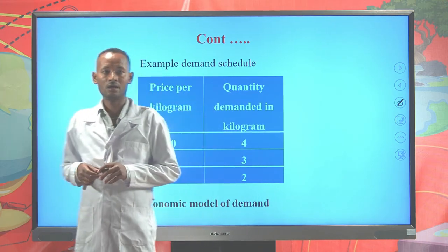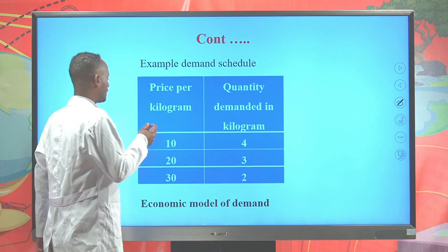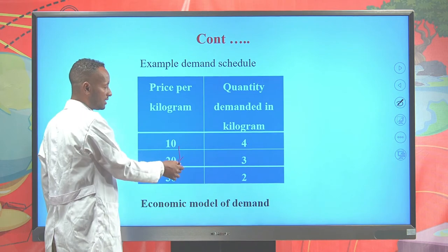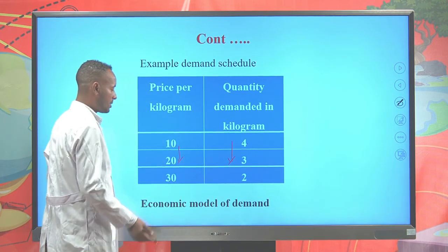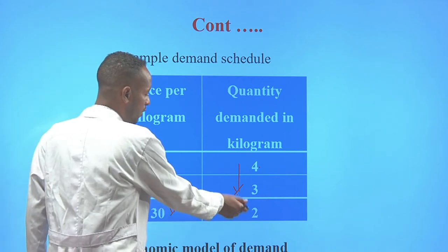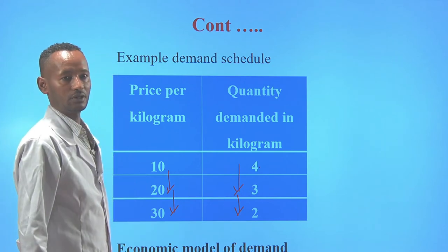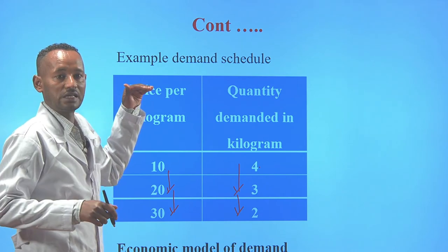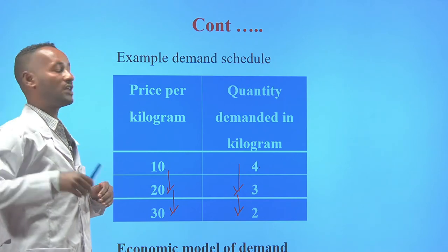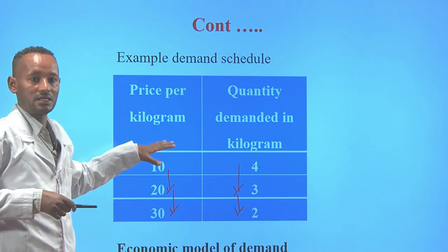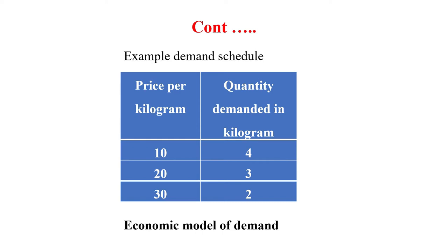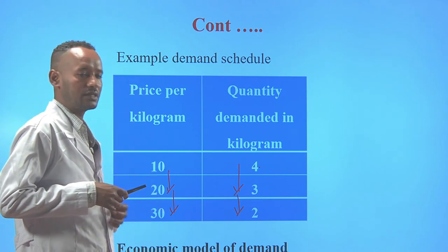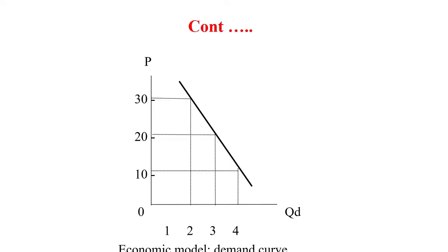This is the demand for orange by one household in one wereda. When the price of a kilogram of orange is 10, the quantity demanded is 4 kilograms. When the price increased to 20, the quantity demanded reduced to 3 kilograms. This shows that other things remaining unchanged, with a rise in price, quantity demanded declines, and with a fall in price, quantity demanded increases — an inverse relationship. This schedule is a typical example of an economic model.